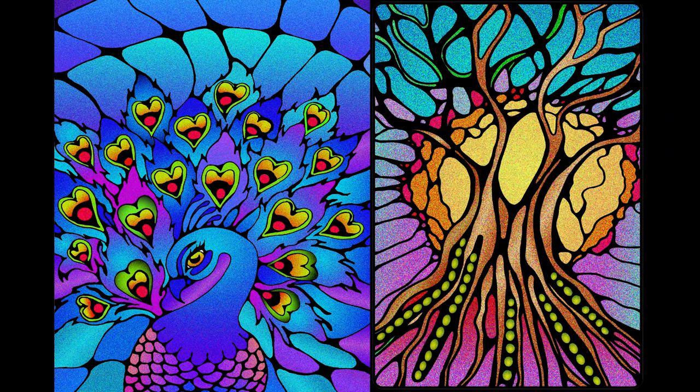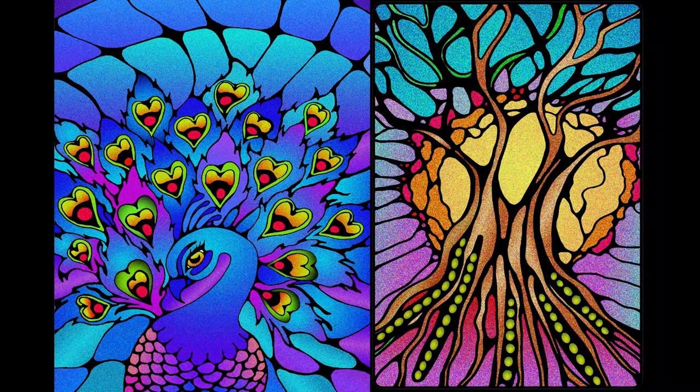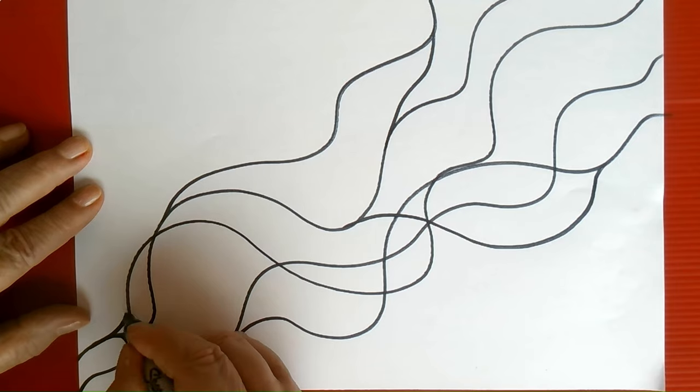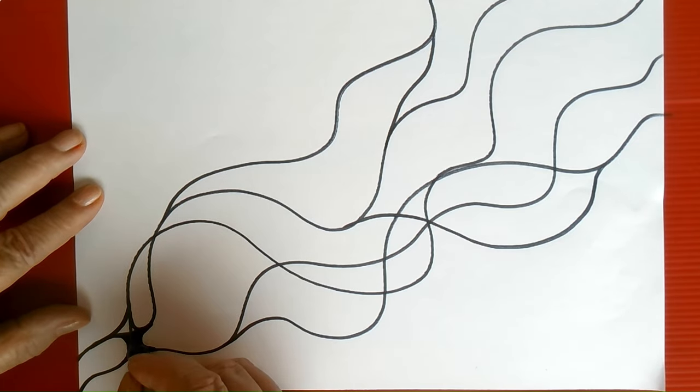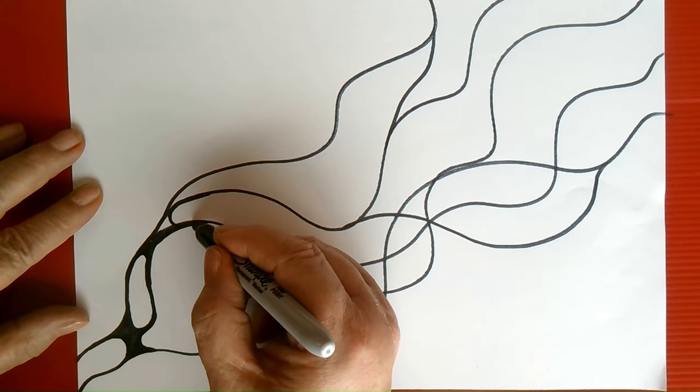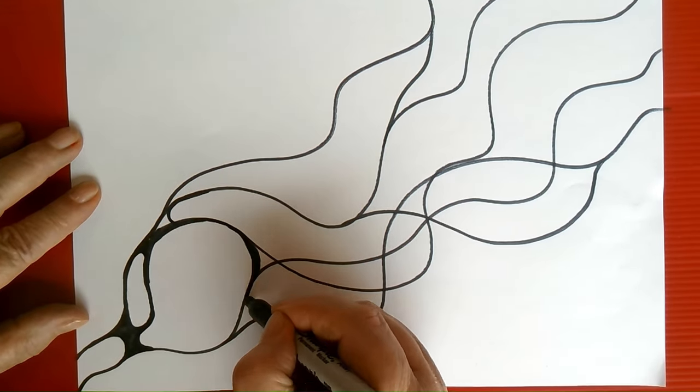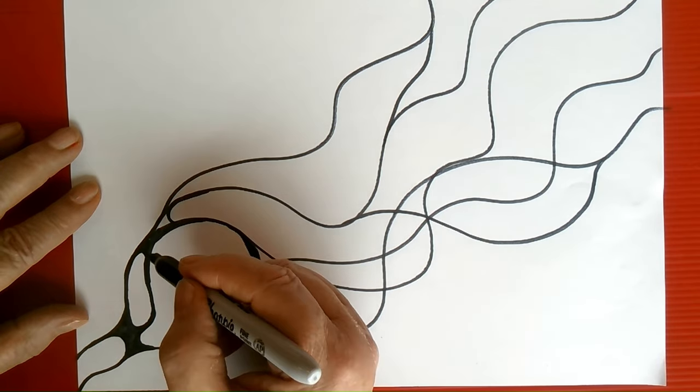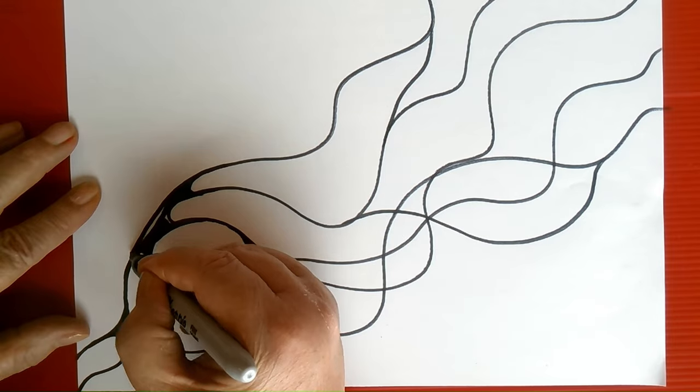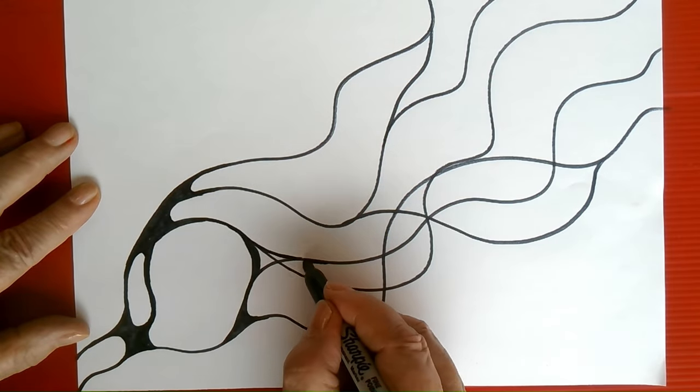Neurographic art is a form of art therapy that is based on the principles of neuroplasticity. It was developed by Russian psychologist Pavel Pisgarev and is designed to help individuals tap into their creativity and promote the brain's capacity for plasticity. The technique involves drawing neuro lines that create abstract shapes and patterns, and then all sharp corners will be rounded off. The rounding off of corners and smoothing out the lines allows energy to flow, like feng shui.